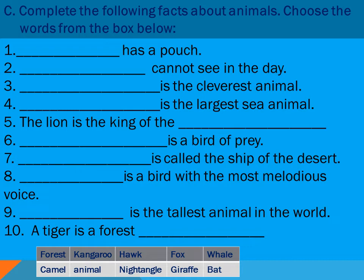This exercise is also about animal facts. Number one: a blank has a pouch — which animal? The options include: forest, kangaroo, hawk, fox, whale, camel, bat, nightingale, giraffe — ten options in total. Number two: blank cannot see in the day. Number three: blank is the cleverest animal. Number four: blank is the largest sea animal. Number five: the lion is the king of the blank.